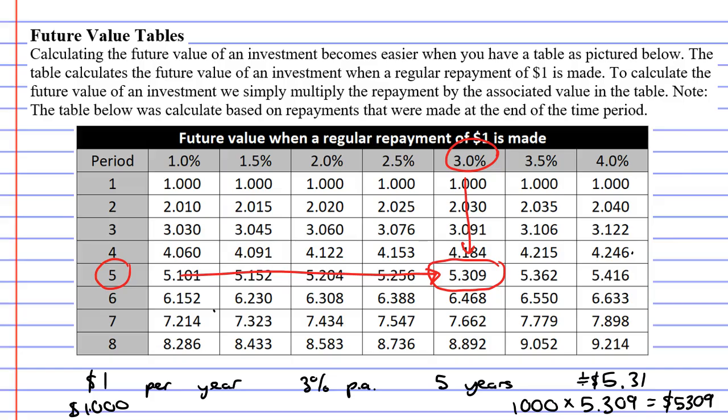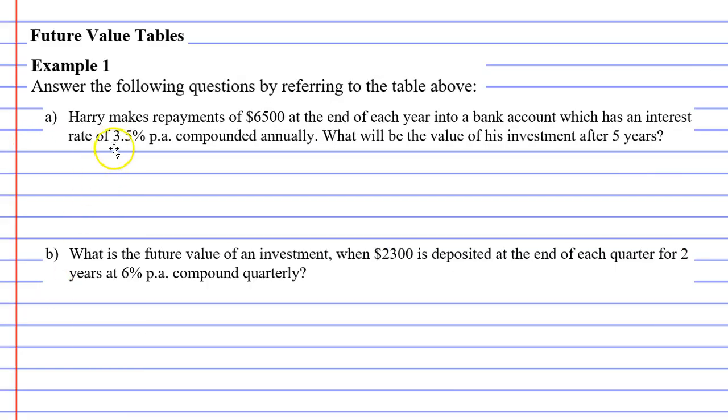So, it's great that this is based on repayments of $1 because all we need to do is multiply whatever number we get from this table by the repayment amount in each question. So, let's go straight into example one. We're going to answer about four questions, A, B, C and D, and we're going to refer to the table that I showed you in the previous slide. Question A says, Harry makes repayments of $6,500 at the end of each year into a bank account which has an interest rate of 3.5% per annum. So, I'm going to underline things as I go. So, here's my repayment, D, here's my interest rate, R. You'll notice that it's compounded annually. So, we don't need to make any changes here. And it's saying what will be the value of his investment after five years. So, underline this as well.